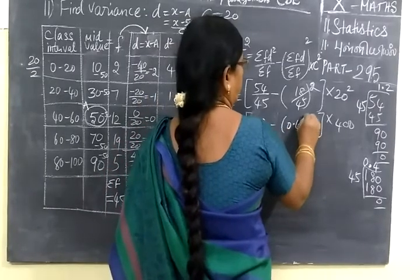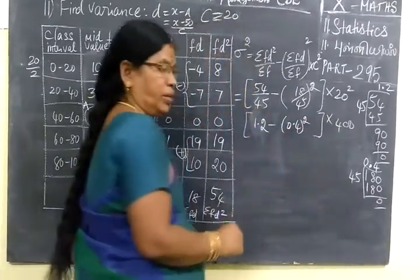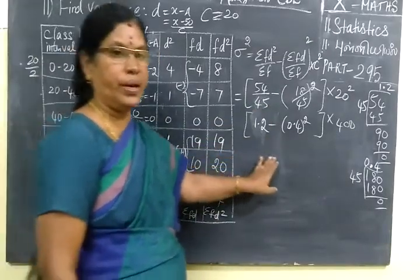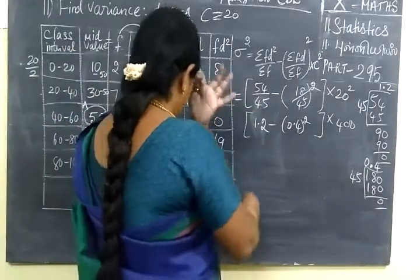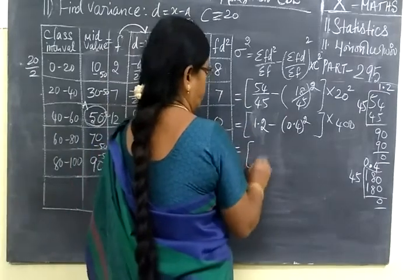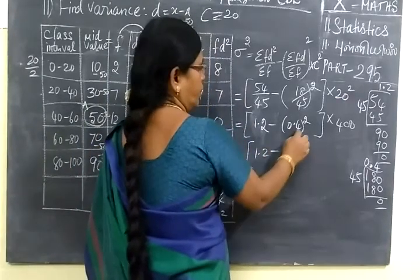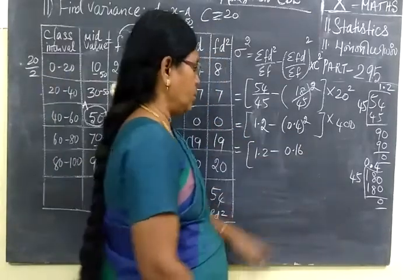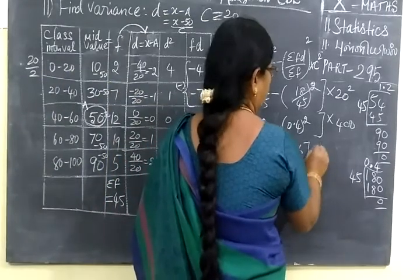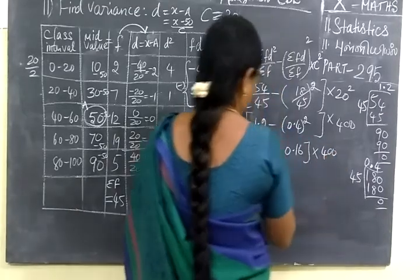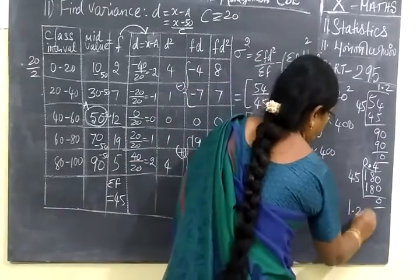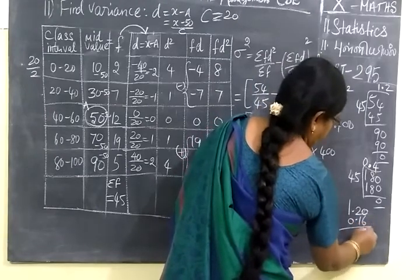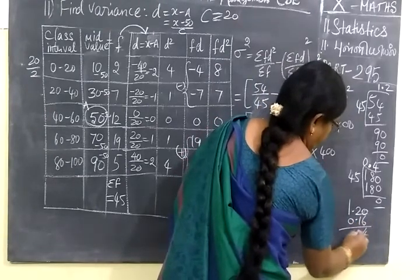0.4 whole square. In the method, easier than the number divide can be done. Otherwise we take LCM and do. So this is equal to 1.2 minus 16 here. So 2 digits, 0.16. 2 decimal place means 400. Now you separate 1.20, 0.16. 2 minus 6, 4, 1 minus 1, 0.